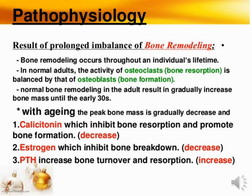Next, we will see pathophysiology of osteoporosis. The first important factor is bone remodeling. Bone remodeling is a lifelong process where mature bone tissue is removed from the skeleton and new bone tissue is formed. That particular process is altered in osteoporosis due to decreased bone density.